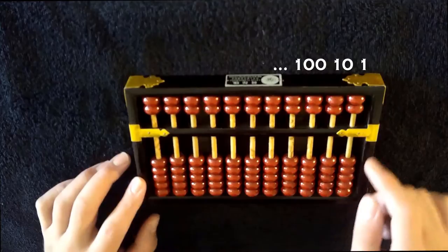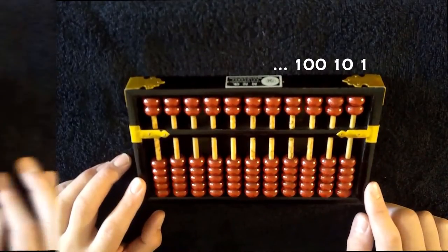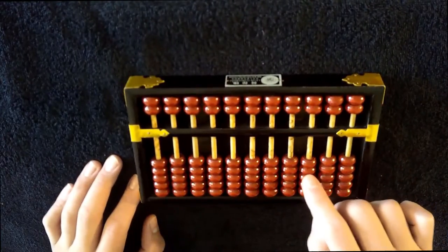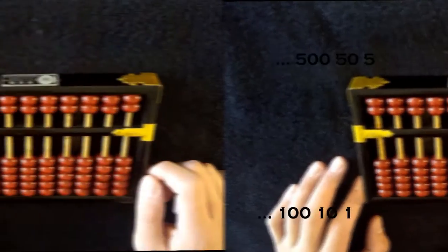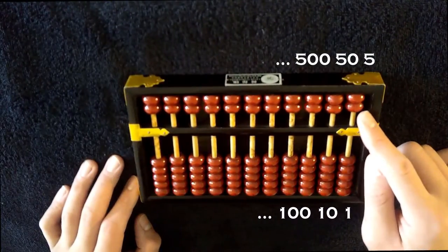Going from right to left, each column represents a number placement. So you have 1s, 10s, 100s, 1000s, and so on. Each top bead is a multiplier for 5 for that placement.